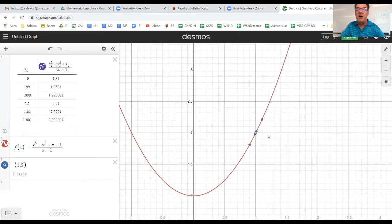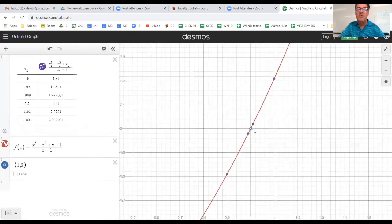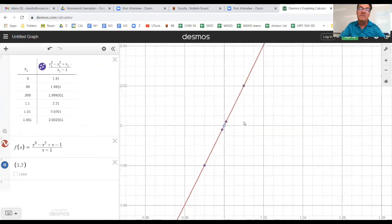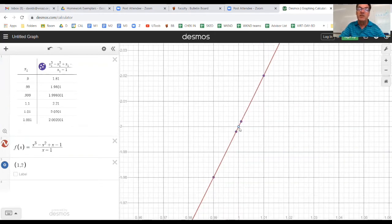So this table of values is now pretty much confirming to us that, indeed, the limit of this as x approaches one is two. And what I'm going to do is zoom in on our graph here. And you can see the points that I added are now on this line. And they're approaching. And see, there's our value at (1, 2), where we are discontinuous, where the function is undefined. But you can see that these points that I've added in my table here are getting closer and closer to that point. So this is your confirmation now that the limit of f(x) as x approaches one is two.